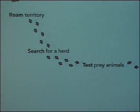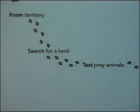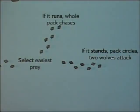Wolfpacks roam a territory that they defend, and they own it basically by walking it — traveling the space, looping around, covering all the territory every few weeks. On a regular basis they need to eat, so as they're roaming they're looking for a herd to target. When they find the herd, they figure out which animal to hunt. Different wolves will chase different animals and figure out which seems slow, weak, young, or unhealthy.